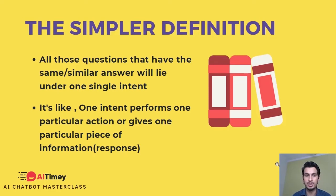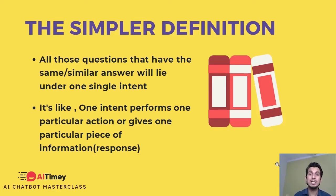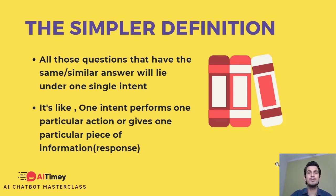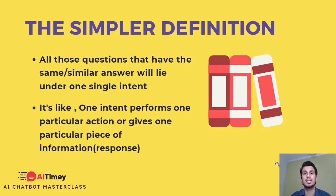The simplest definition, according to me, is: all those questions that have the same or similar answer will lie under one single intent. One intent performs one particular action — it gives you one piece of information, or asks the user one piece of information, or gives the user one answer. So a user message and an assistant message — that assistant message is going to come from one single intent.